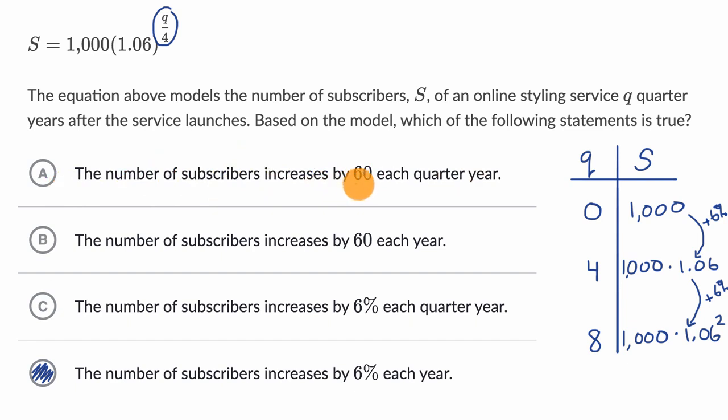The number of subscribers increases by 60 each quarter year. Well, this would be a linear equation. It would look something like S equals your initial number of subscribers plus the number of quarter years times 60. It would look something like this for choice A, which clearly we don't have over here.